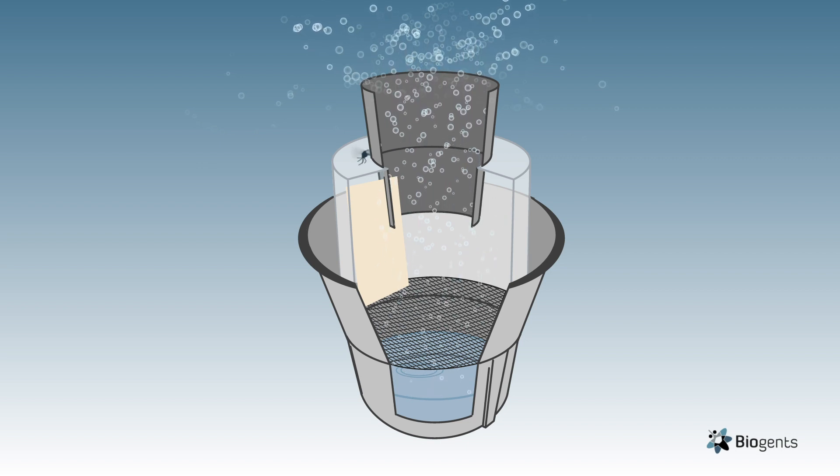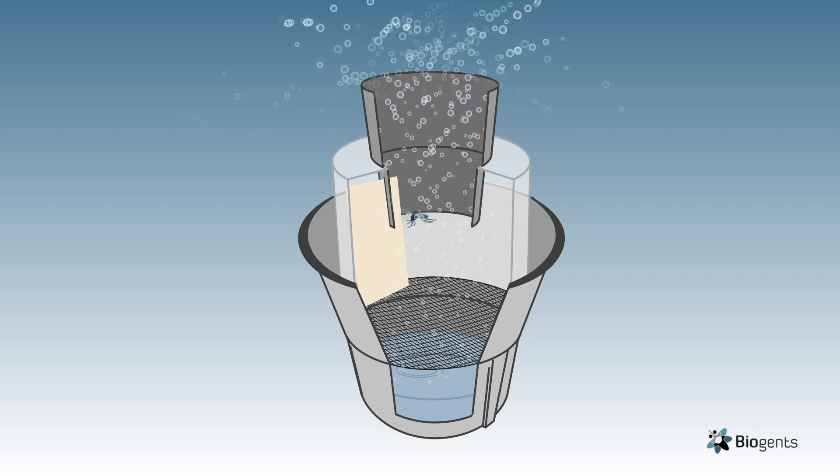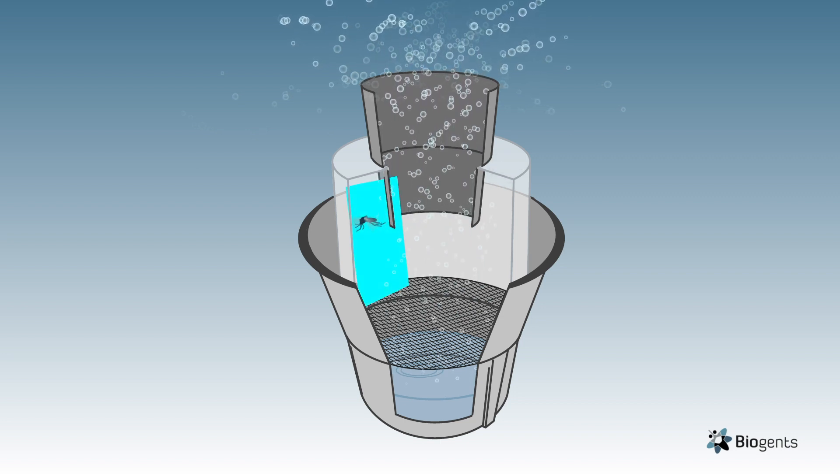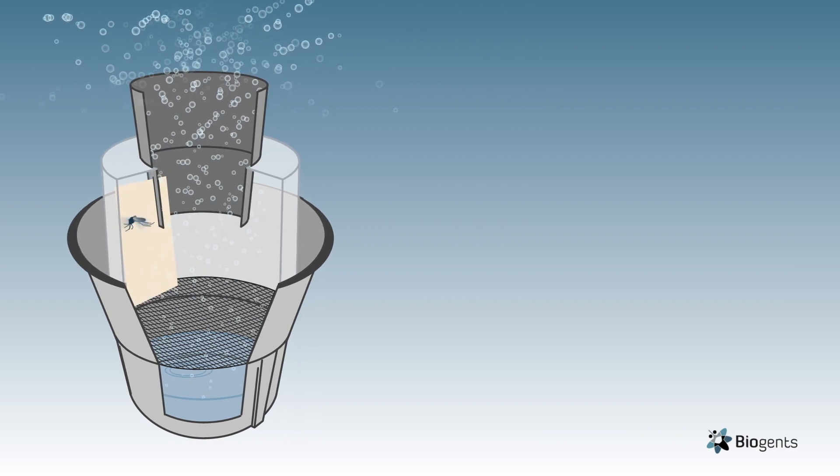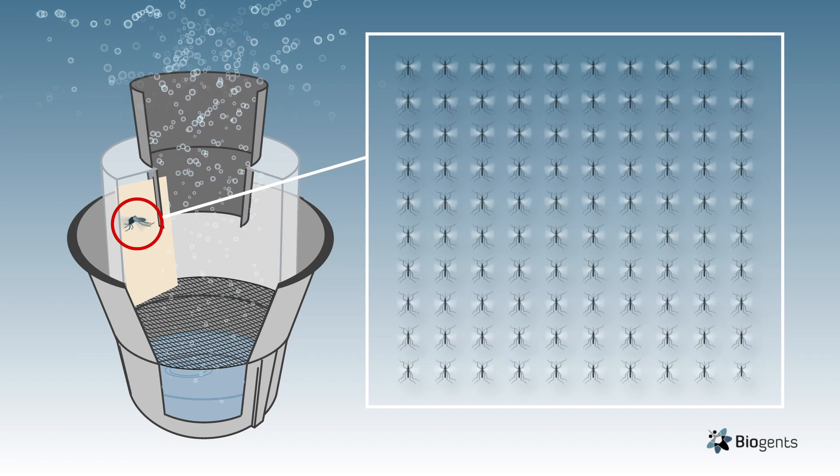Once inside the chamber, mosquitoes try to escape through the translucent parts where they are exposed to the surface of the sticky card and die. In this way, the trap prevents with each captured female about 50 to 100 descendants.